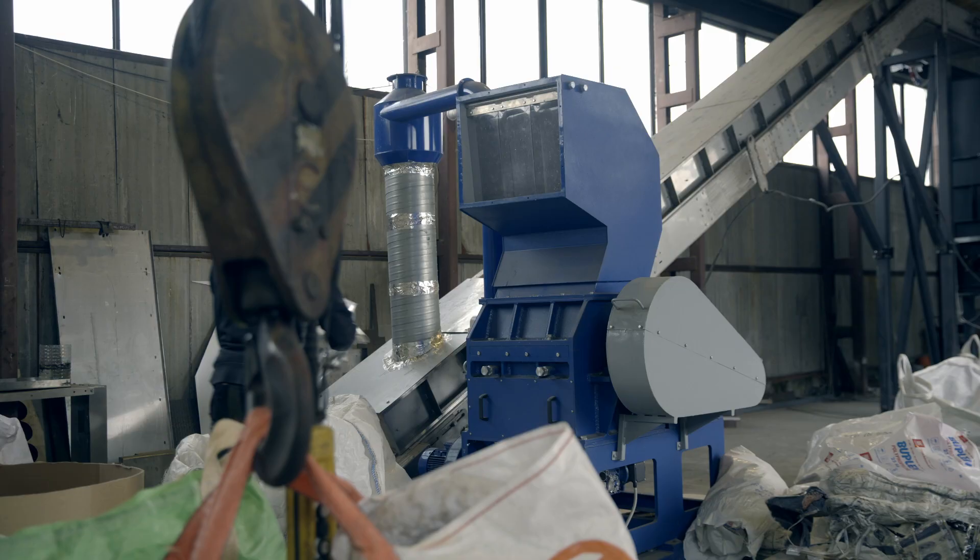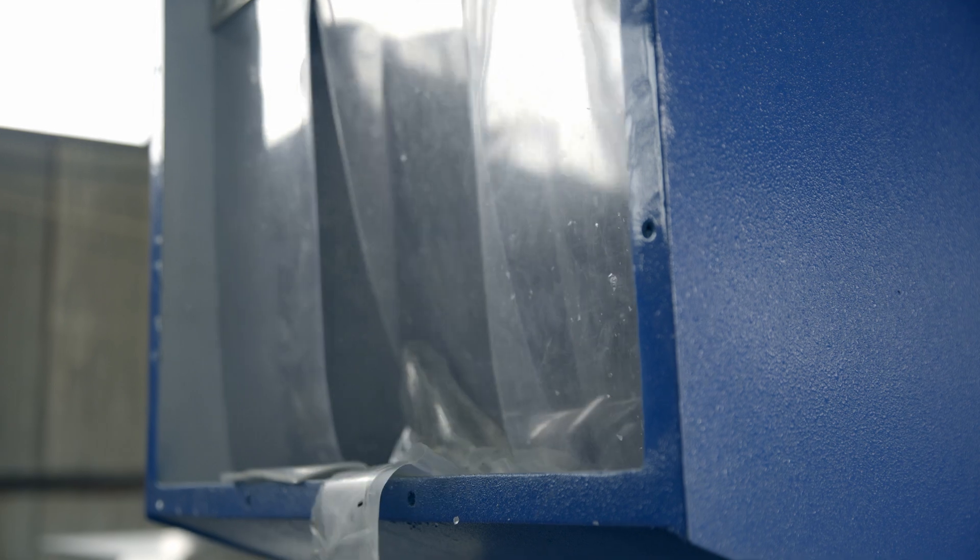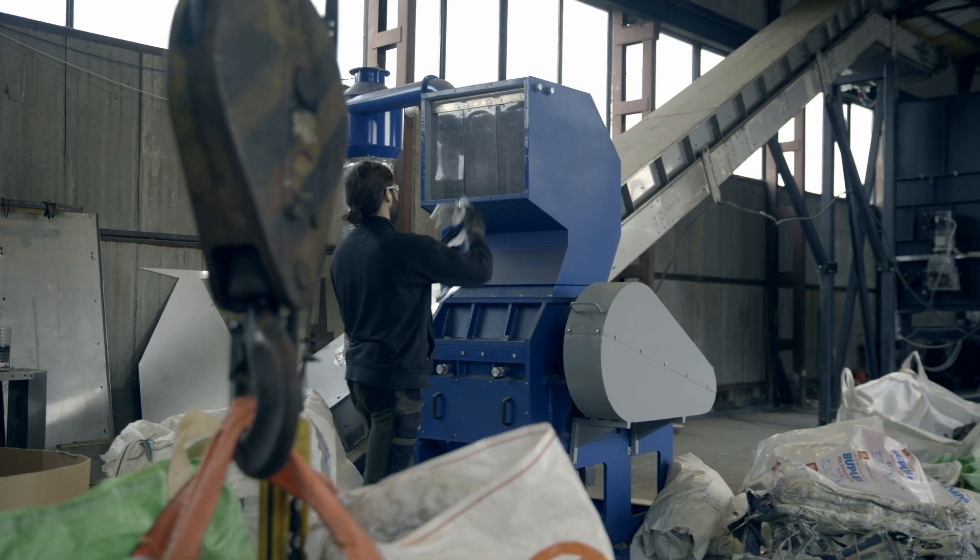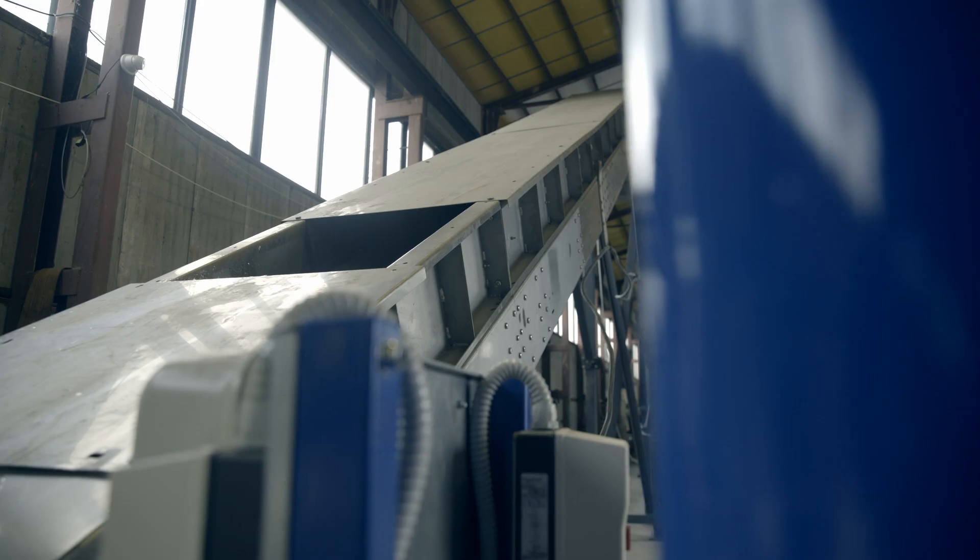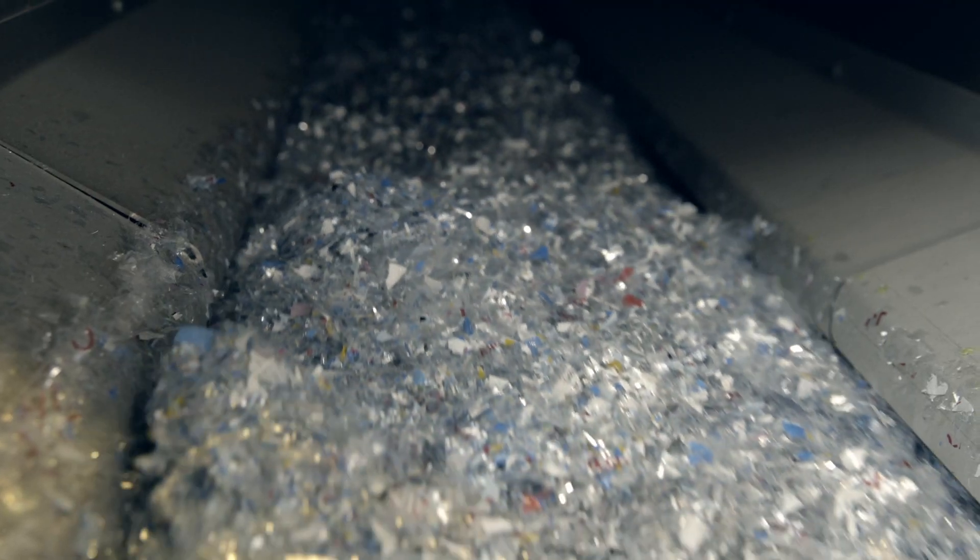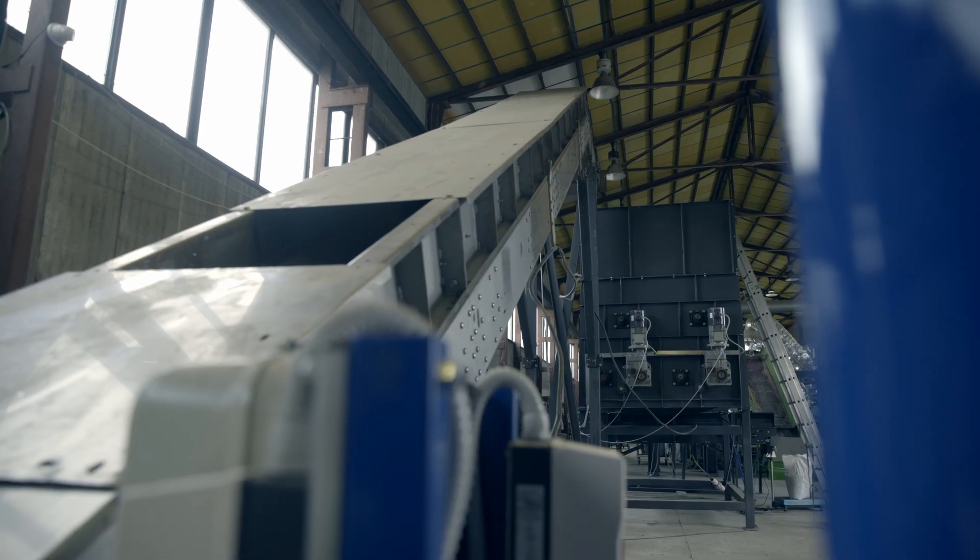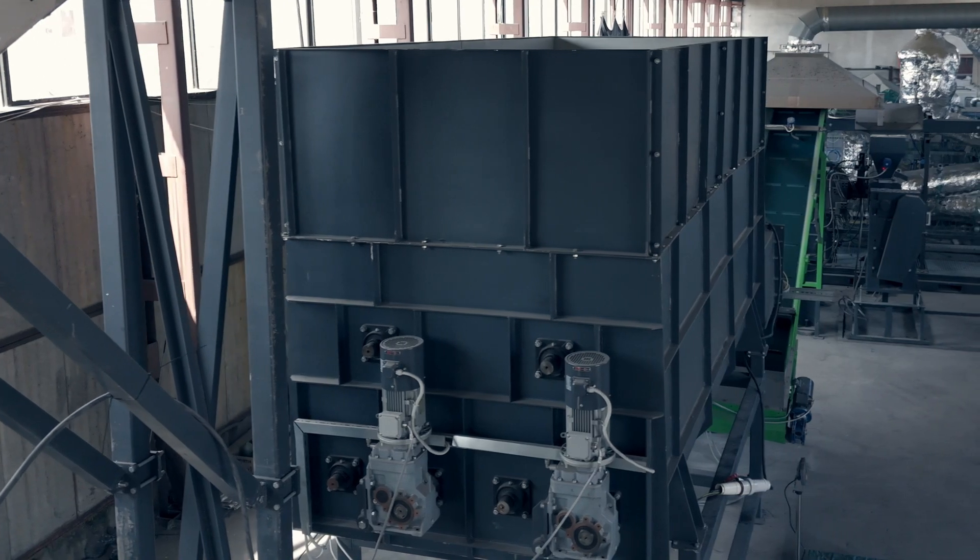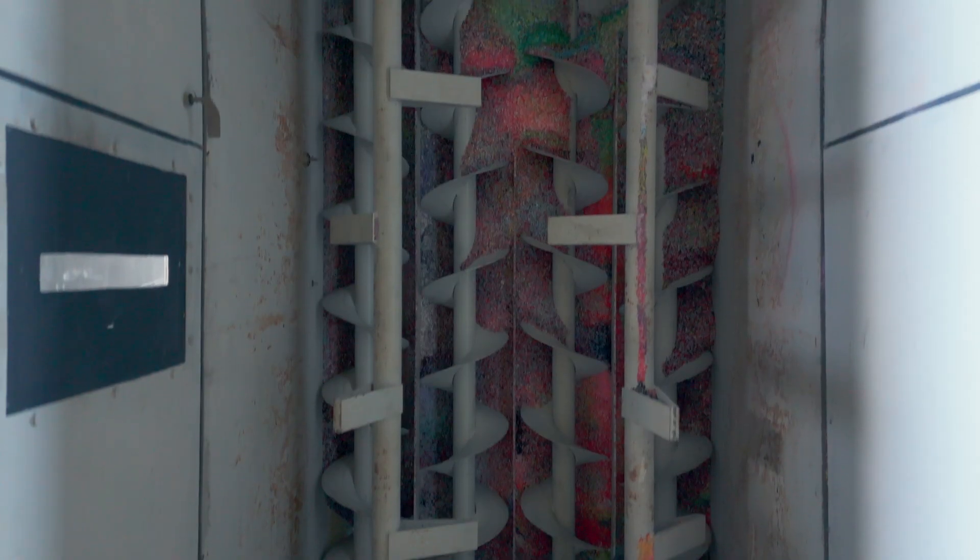The process begins with the shredding of the delivered material. As it passes through the grinder, the raw material is crushed into flakes just a few centimeters in size and then transported into the buffer box via the conveyor system.